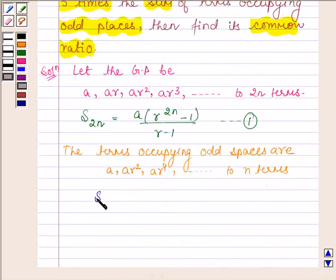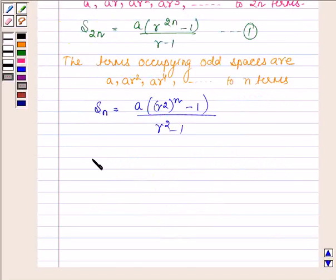So, the sum of these N terms is equal to A, with common ratio R² over N terms: S_N = A(R^(2N) - 1)/(R² - 1). Let this be equation number 2.